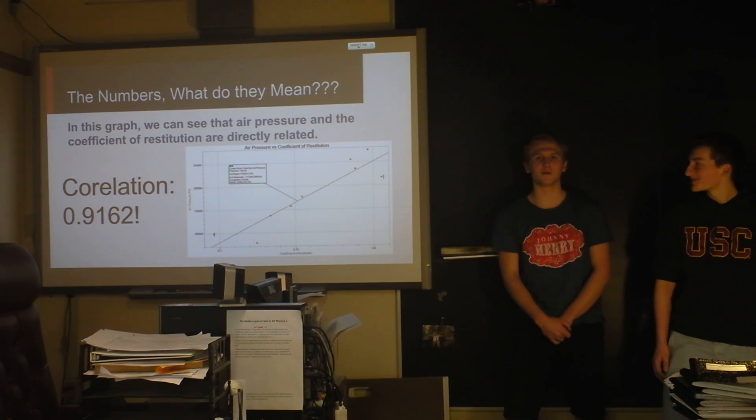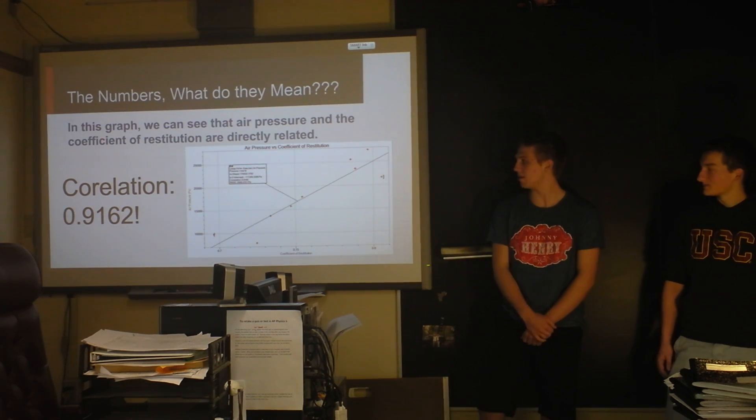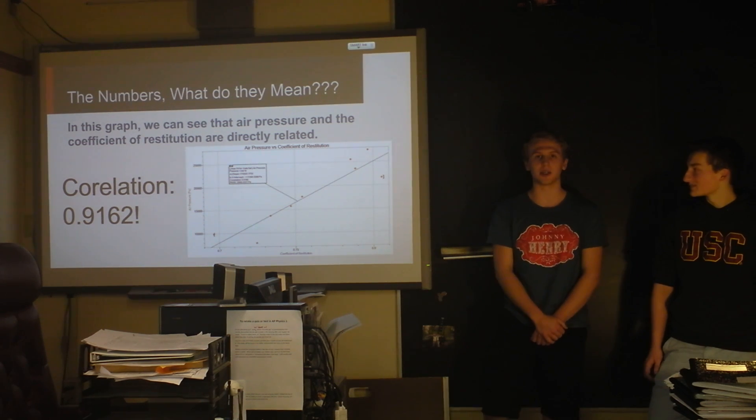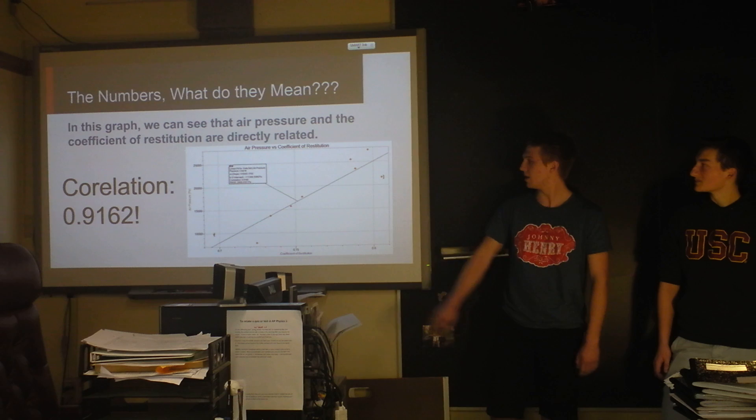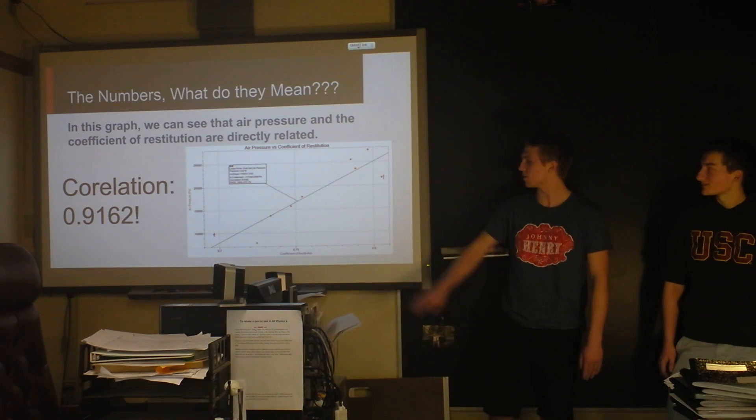Yeah, a correlation of one basically means that all of the points were on the line, and 0.91 is pretty close for a linear relationship. So that was exciting information to see, like, oh, we got it pretty good. And that's with all of the error that we could have had in either direction, which is fun.